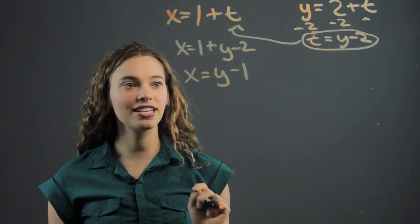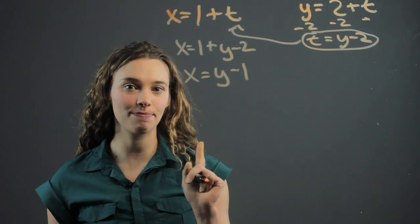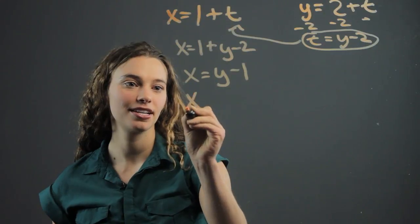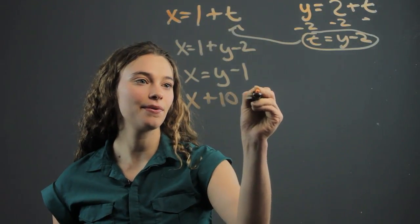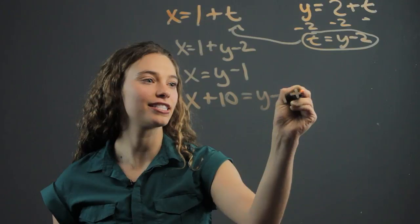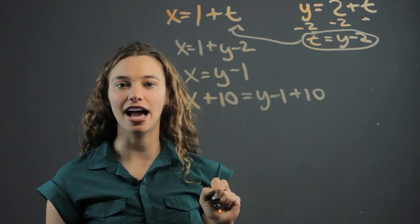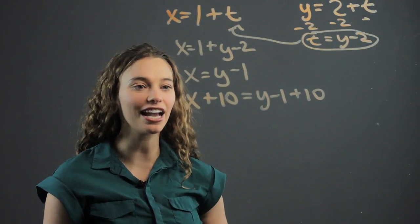Now the important next step is to add 10 to both sides. Remember this step. So you have x plus 10 equals y minus 1 plus 10, right? We just added 10 to both sides. You can do anything to an equation as long as you do it to both sides.